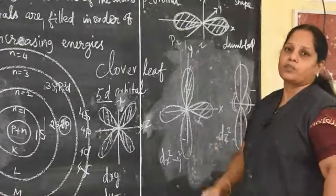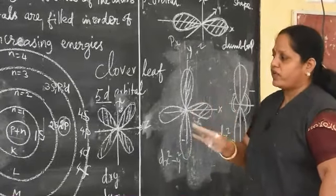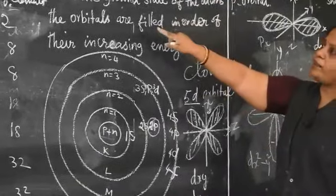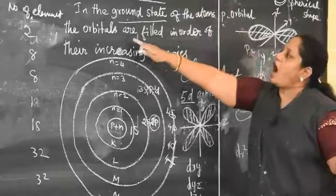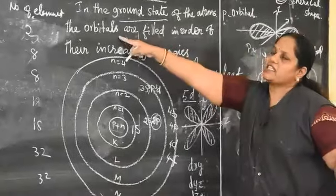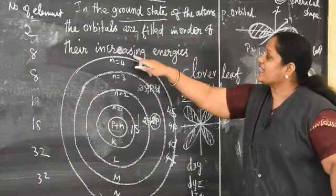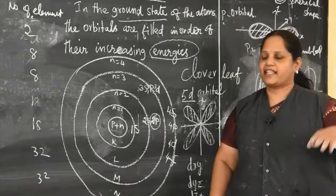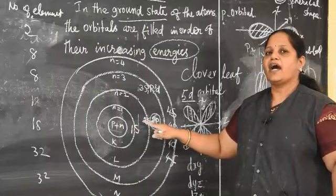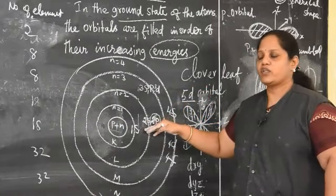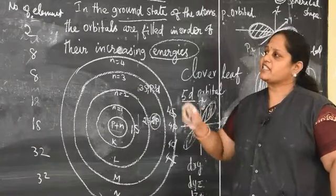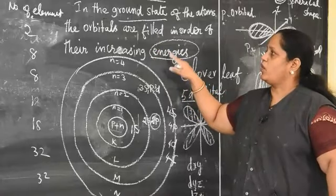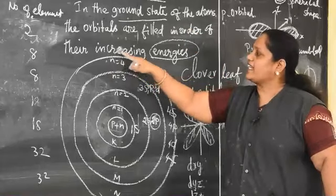To fill electrons in a given orbital, you use the Aufbau principle: in the ground state of the atom, orbitals are filled in order of their increasing energies. Think of it like school — first LKG, then UKG, then first standard. The lowest energy level is 1S; then 2S, then 2P, then 3S, then 3P, and so on.